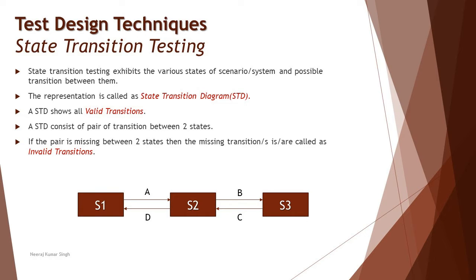For a simple example, assume there is a process with three different states: S1, S2, and S3. A user can jump from S1 to S2, or S2 to S3, and similarly come back from S3 to S2 and S2 to S1. There is no direct transition between S1 and S3, or S3 back to S1. A user can only navigate from S1 to S2, then back to S1, or from S2 to S3.